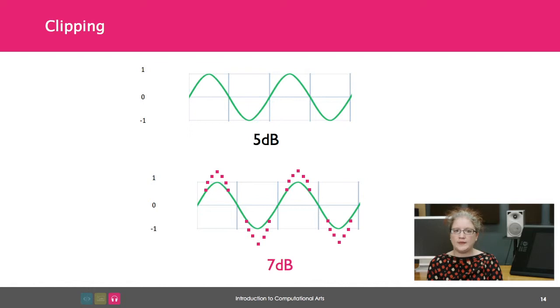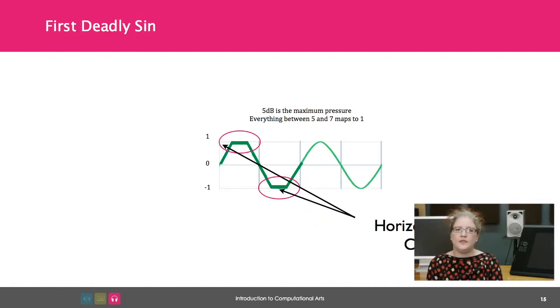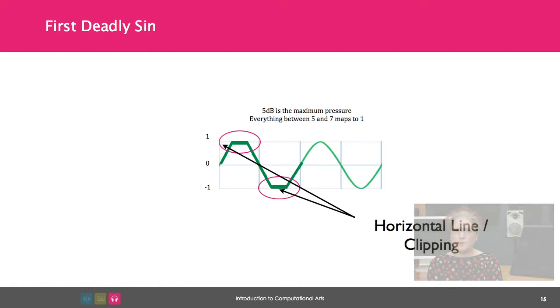The equipment only lets you record from negative one to one, so anything above five decibels gets mapped to one. This creates a horizontal line on the waveform. We're not able to measure the change in pressure from five to seven, and so the information gets lost.